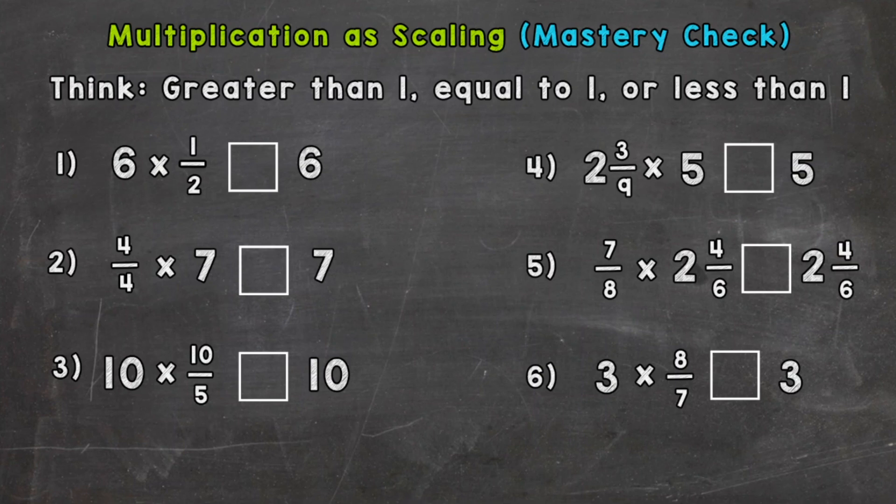Welcome back. I'm assuming you have those six done, so let's see how you did. Number one, we have 6 times 1/2, so you'll notice a 6 on each side. We multiplied by 1/2, which we know is less than a whole, so it's actually going to drag the value of that 6 down. The answer is going to be less than 6, so 6 times 1/2 is less than 6.